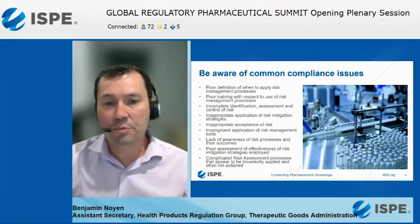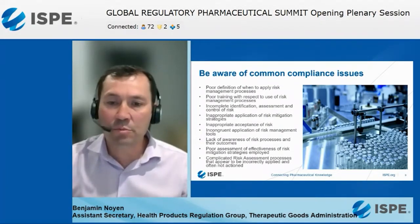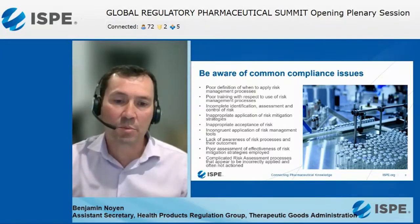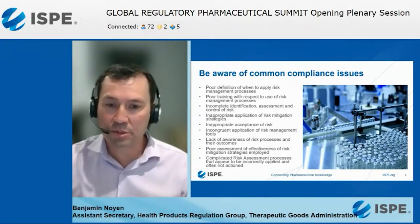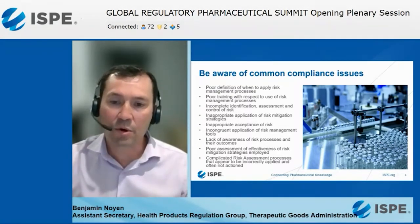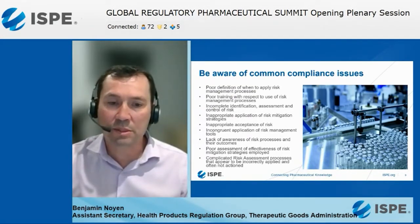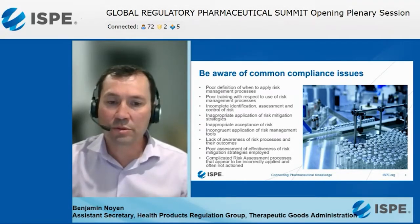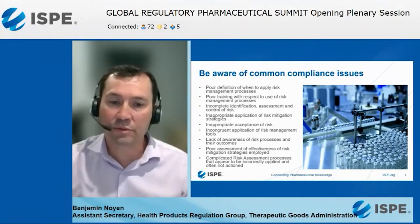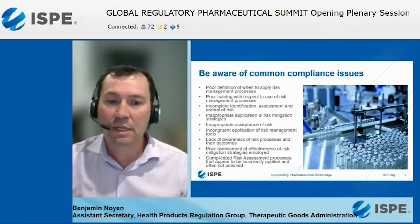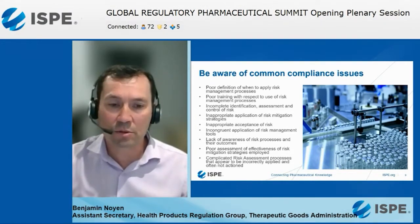GMP inspectors will look at when a manufacturer applies the quality risk management approaches and principles of their own quality management systems. They'll want to determine how it's applied by looking at examples of deviations, customer complaints, and change control.